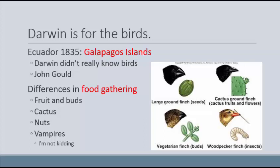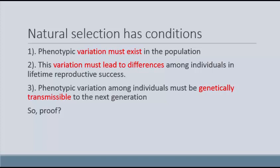Natural selection is what we now know of Darwin's work as. Watching all these birds and food choices, he came to the realization that form meets function. We study natural selection now as a set of conditions that guide us through evolution. In natural selection, phenotypic variation must naturally exist in a population. Natural selection acts on traits you have — some individuals will have slightly better traits than others. That variation has to lead to big differences among individuals and must have an effect on their lifetime reproductive success.